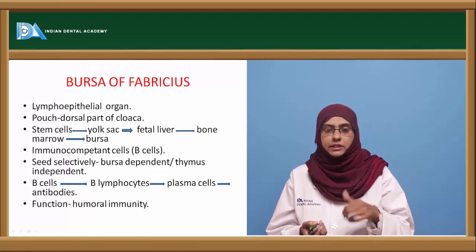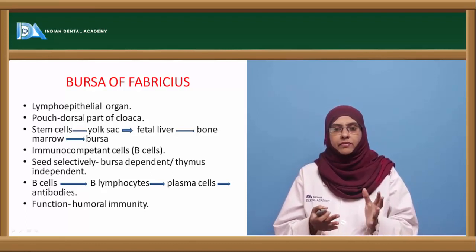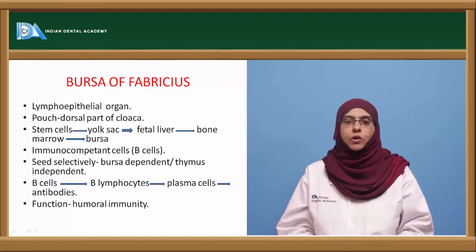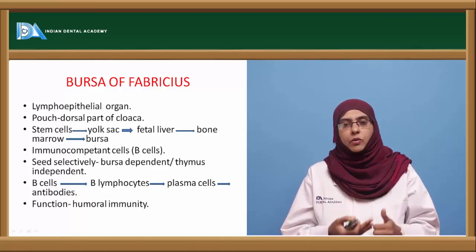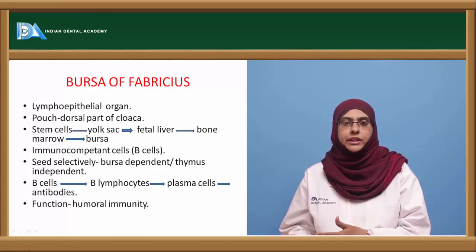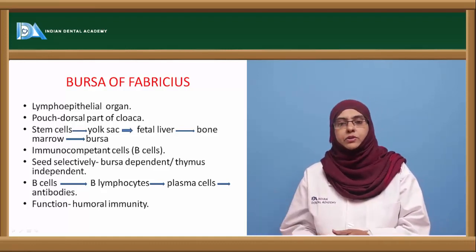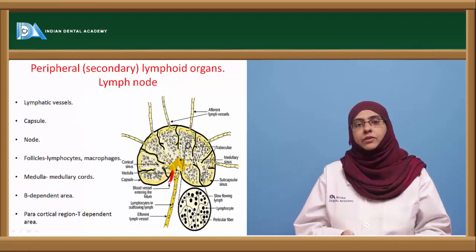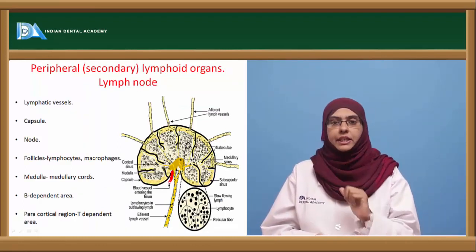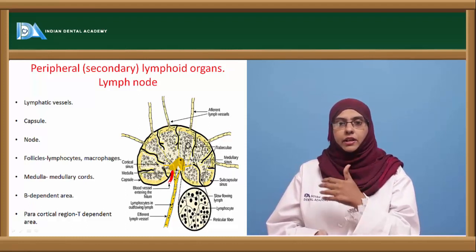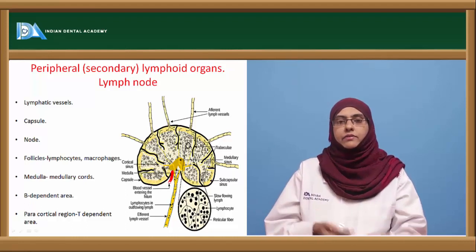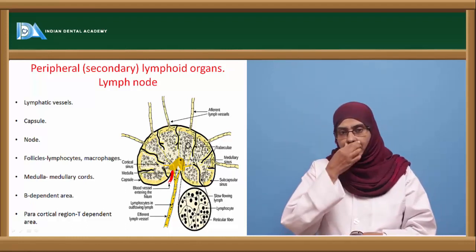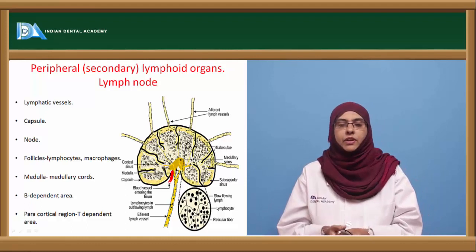Both primary lymphoid organs — thymus and bursa of Fabricius in birds, and bone marrow in humans — help in the development of lymphocytes. When lymphocytes become immunocompetent, they move to peripheral lymphoid organs via blood and body fluids to mount an immune response. The function of the secondary lymphoid organs is to present the lymphocyte with the antigen — wherever the antigen enters the body, it is captured by the secondary lymphoid organ, which provides a ground for lymphocytes to interact with the antigen.